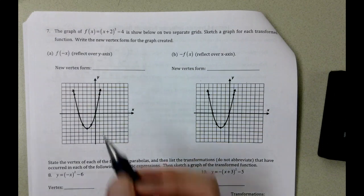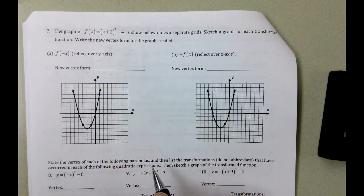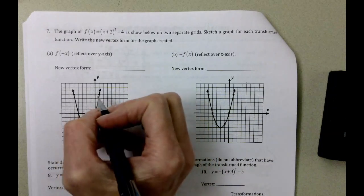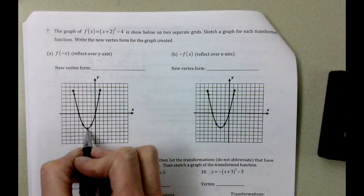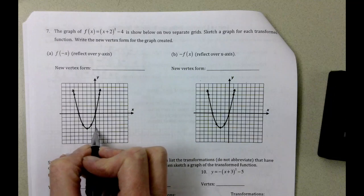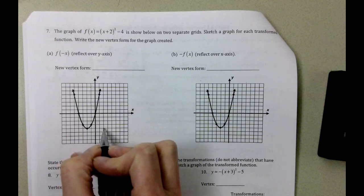So remember when we reflect over the y-axis that everything is just counting. So I usually start with the vertex here, so this is 1, 2 away, so 1, 2 away.